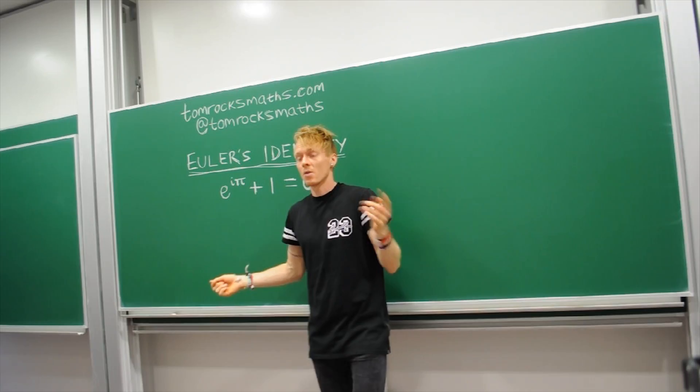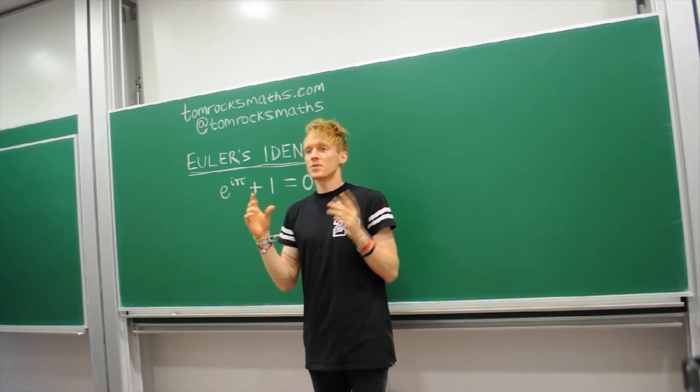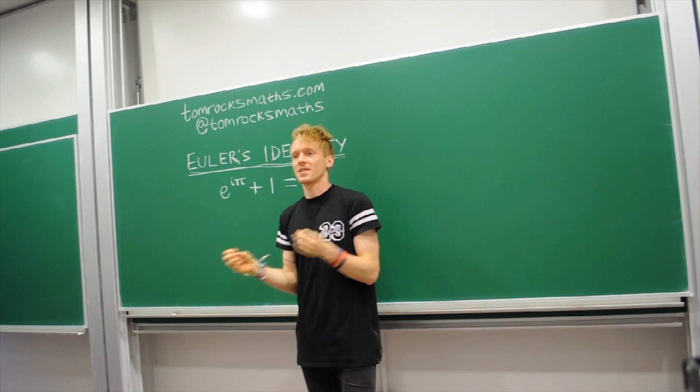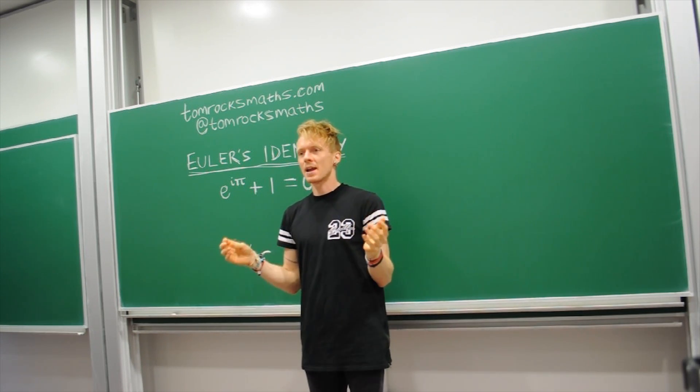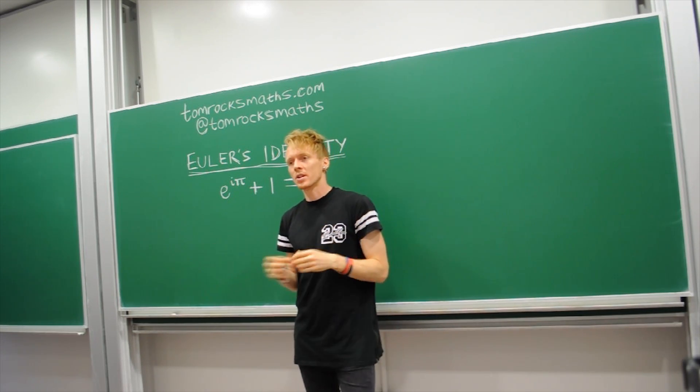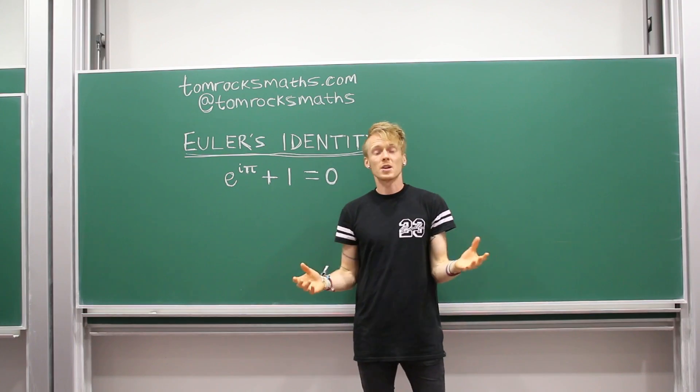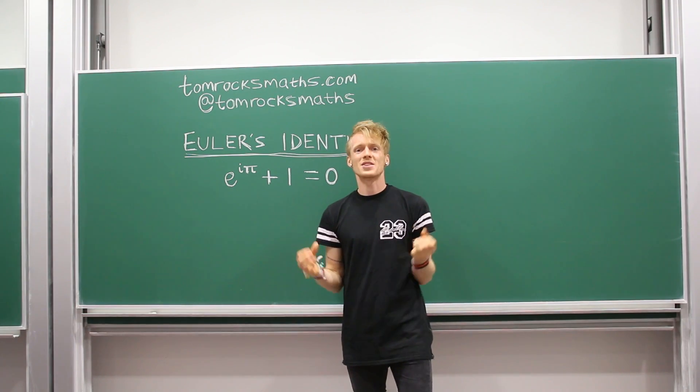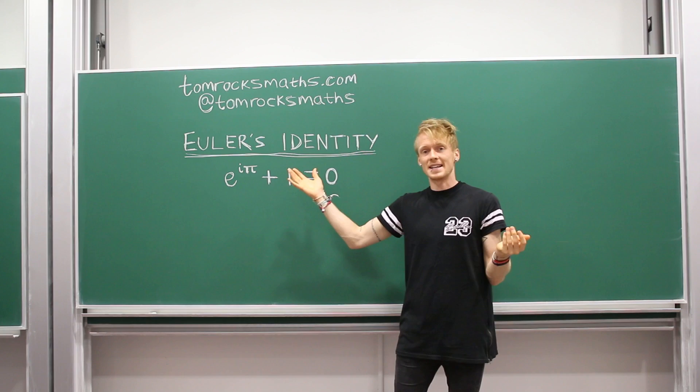Welcome to Equation Stripped, where in each video I take some of the most important equations in maths and strip them back layer by layer so that hopefully everyone can understand what they mean. This week we're looking at the most beautiful equation in maths, Euler's identity.